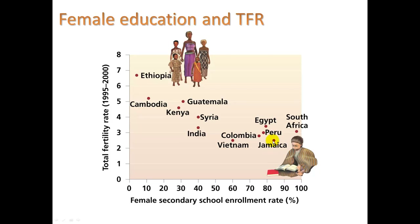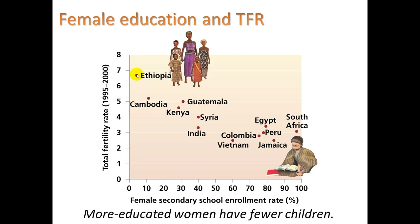In Jamaica, the fertility rate is about 2.4. Ethiopia, 6.6. So big differences here. More educated women have fewer children — that's borne out through many studies.